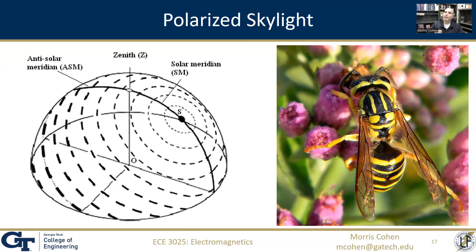If you're curious about why skylight is polarized, it has to do with something called birefringence, which is a little beyond the scope of this course. It's an interesting topic relating to how skylight becomes polarized in the first place, and it involves the way light interacts with atmospheric molecules — a phenomenon called Rayleigh scattering. But if you take a class on radar systems, for example, you may cover this.